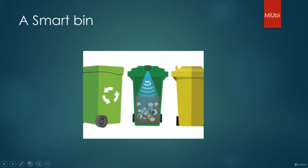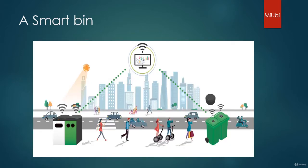When the trash can gets filled, it will send the status to the control station. There is a control station which is monitoring all the data of trash cans. Now we know how many trash cans are filled and how many are not filled. This particular information can be shared with a garbage collector.